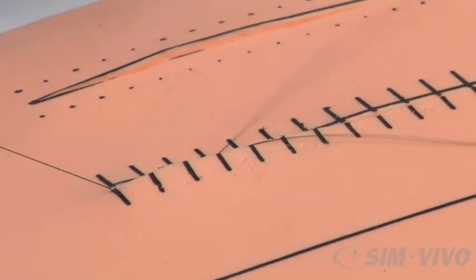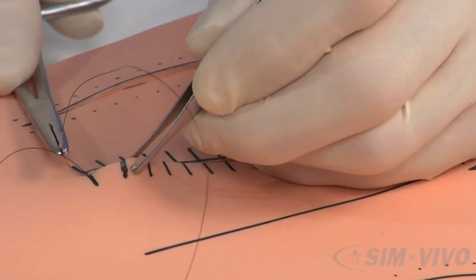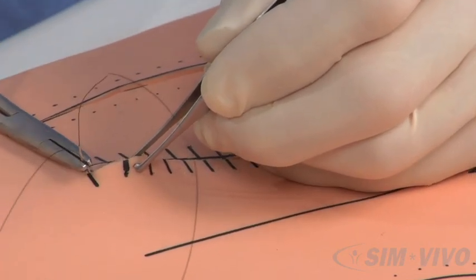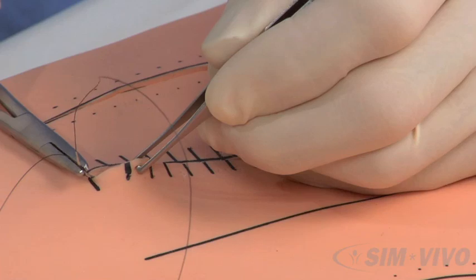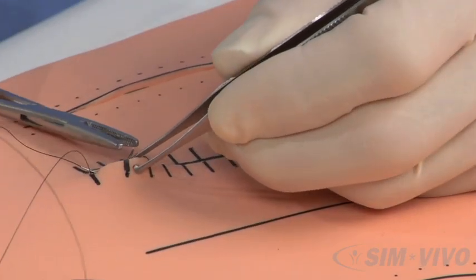Start near the right end of the incision and place a subcuticular suture into the skin away from you. Pull it through, leaving a few centimeters of tail.